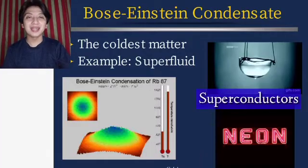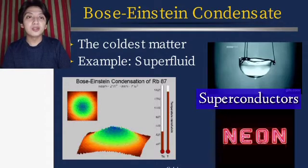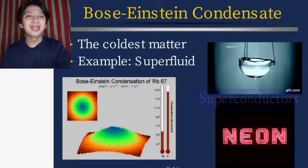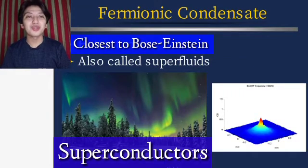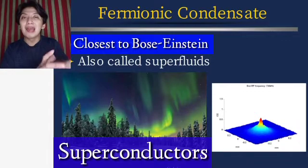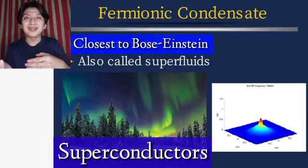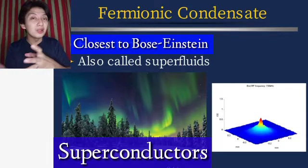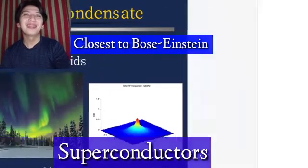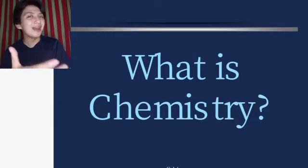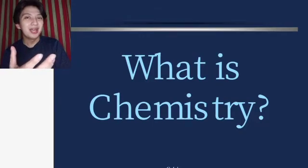Bose-Einstein condensate is the coldest state of matter. An example is a superfluid, which flows upward. Fermionic condensate is the closest to Bose-Einstein condensate and is also called a superfluid, but it is made up of fermions, while Bose-Einstein condensate is made up of bosons.